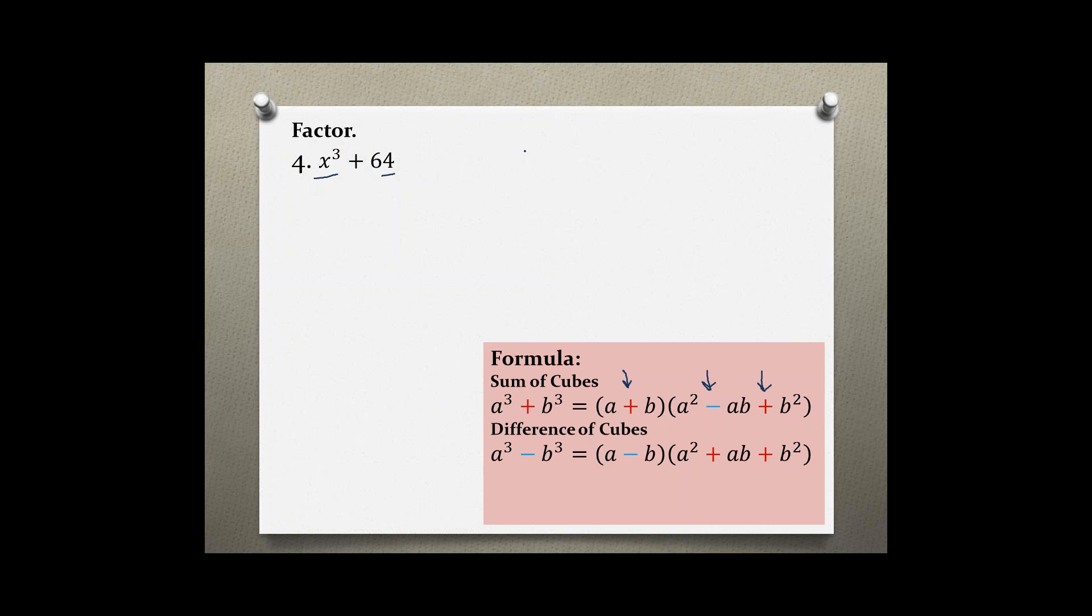Before we start, let's figure out what is our a and what is our b. So for a, if I cube root x cubed, I get x. And for b, the cube root of 64 is 4, because 4 times 4 times 4 equals 64.